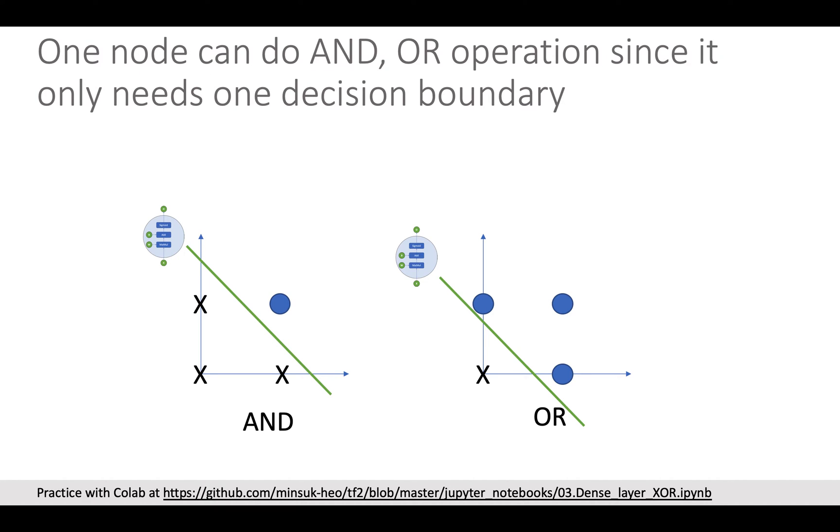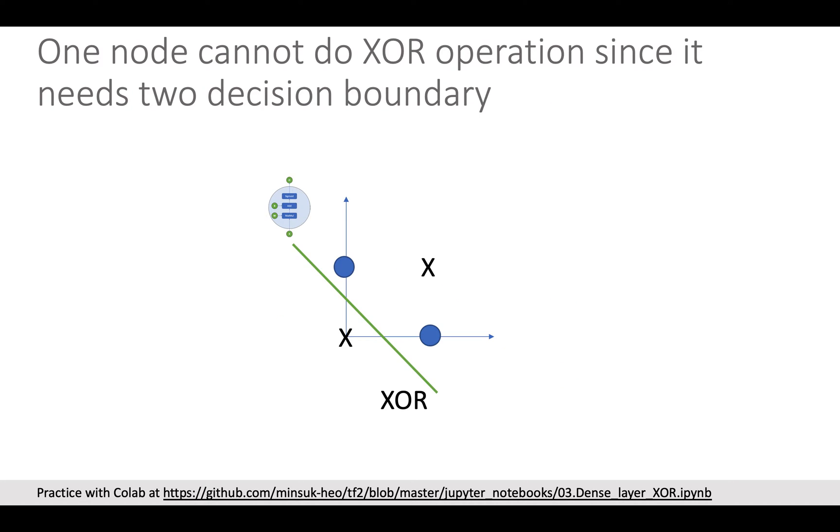Previously, we made AND and OR operation with one single node. The reason why we could implement AND and OR operation with just one single node is because these operations just need one decision boundary to classify O or X, and one node can draw one decision boundary as you can see from this picture. However, we cannot implement XOR operation with one single node because one decision boundary cannot classify O or X clearly.